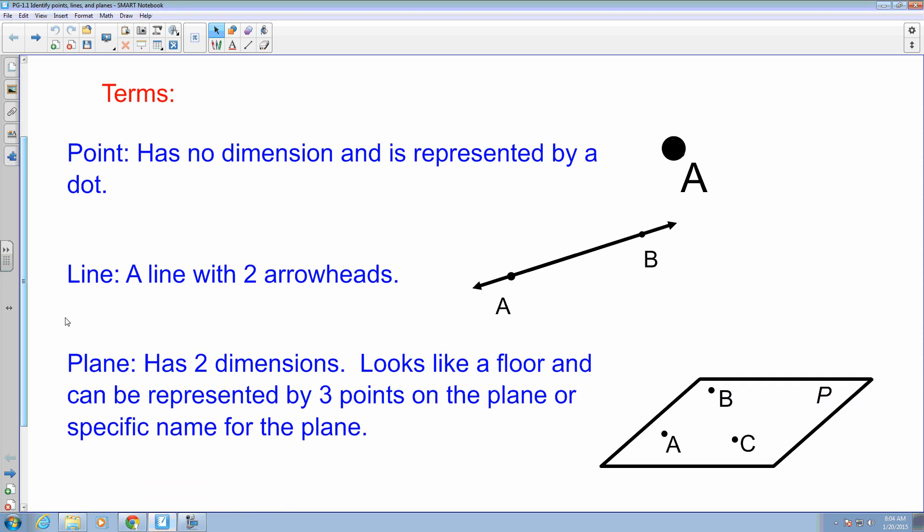The other definitions are here on the screen. We have a line where it is represented by two dots and it has arrowheads going in both directions, which means it goes on and on to infinity in both directions. And if we were to represent this line, we would call this line AB.